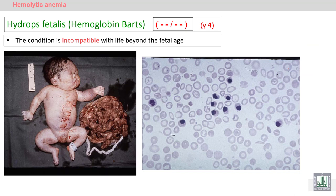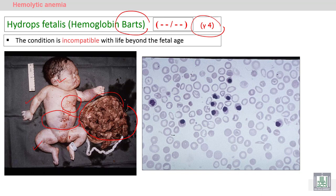Hydrops fetalis is incompatible with life because of the absence of all alpha globin genes and production of abnormal hemoglobin called Hemoglobin Barts, which consists of four gamma chains. During intrauterine life, it is incompatible with life, so the baby suffers from severe anemia and severe heart failure, associated with edema of the face, edema of the limbs, swelling of the abdomen (ascites), swelling of the placenta, and death of the baby.